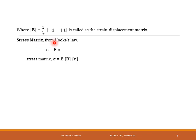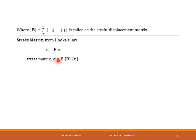The stress matrix can be obtained from Hooke's law. From Hooke's law, stress is directly proportional to strain: σ = E·ε, where E is the Young's modulus of the material. Hence, substituting ε = B·u, the stress matrix is given as σ = E·B·u. This completes the derivation of the strain-displacement matrix and stress matrix for a linear bar element.